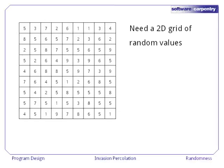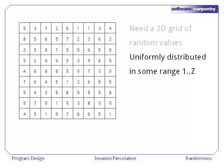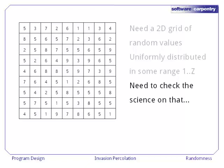If you recall, we're supposed to be creating a 2D grid of random values. We're going to choose those random values uniformly from some range 1 to z. Now, we should check the science on this, because there was nothing in our original specification that said the values in the grid should be uniformly distributed, or even that they should be integers, but these seem like safe, simplifying assumptions for now.